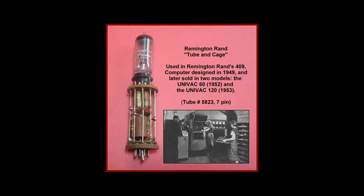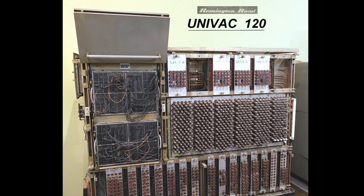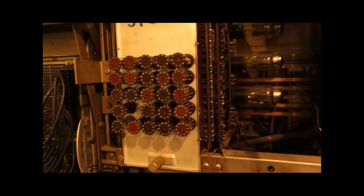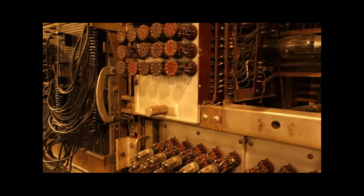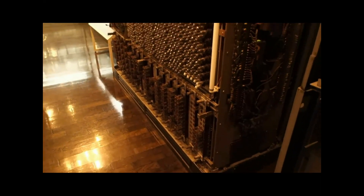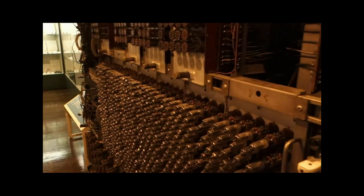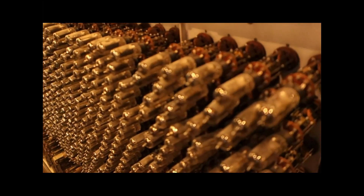Seen here is an interesting configuration known as tube and cage. Tube and cage units were used in the 1949 Remington Rand 409 computer. The 409 was later sold in two models: the Univac 60 and the Univac 120. Shown here is a Univac 120 with approximately 800 tubes, which cost $90,000 US dollars in the late 1950s. Over 1,000 Model 60 and 120 units were eventually produced.